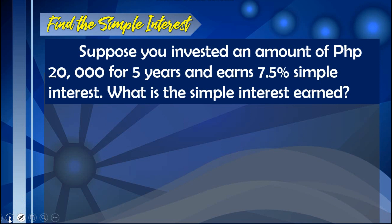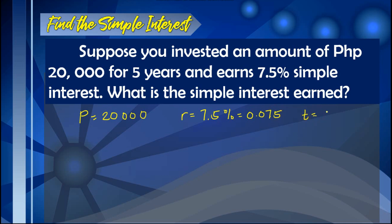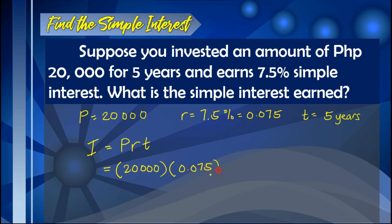For our first example, let us find the simple interest. Suppose you invested an amount of 20,000 for five years and earns 7.5% simple interest — what is the simple interest earned? Based on the given problem, we have the principal of 20,000, the rate of 7.5% which is 0.075 in decimal, and the time of 5 years. Using I equals P times R times T, we multiply: 20,000 times 0.075 times 5, which gives us a value of 7,500. The simple interest earned is 7,500 pesos.